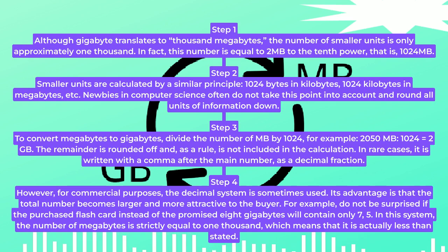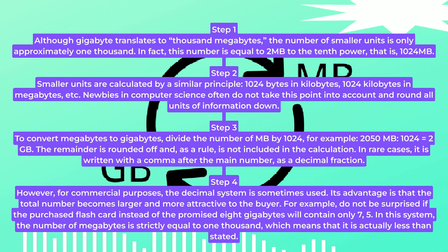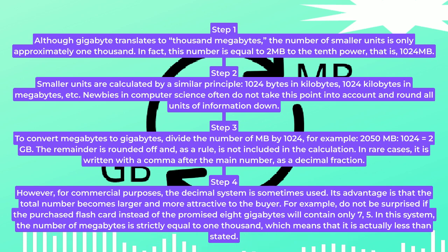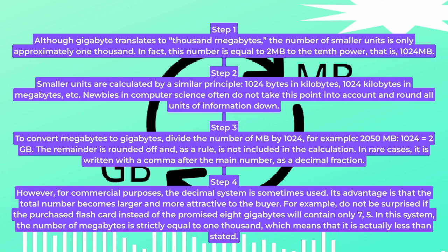Step 1. Although gigabyte translates to 1000 megabytes, the number of smaller units is only approximately 1000. In fact, this number is equal to 2 to the 10th power megabytes, that is, 1024 megabytes.